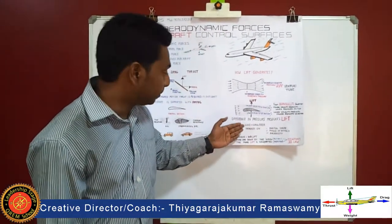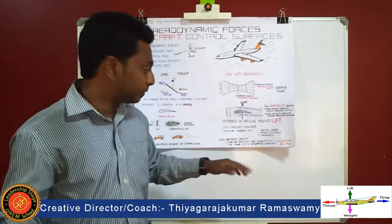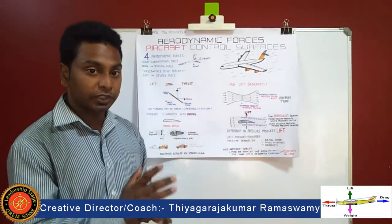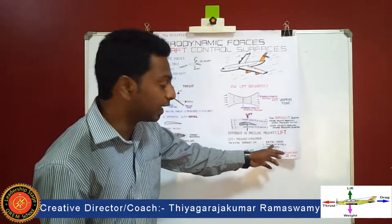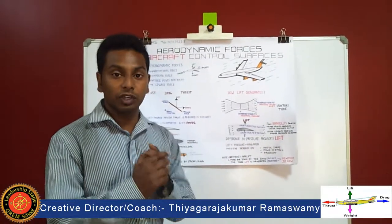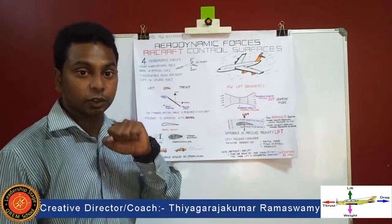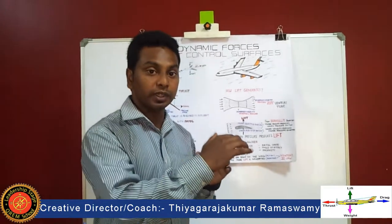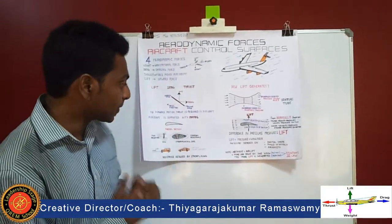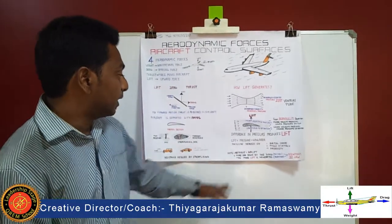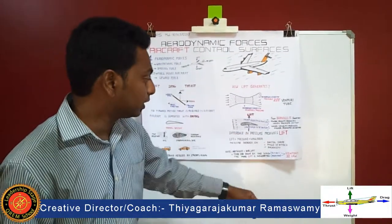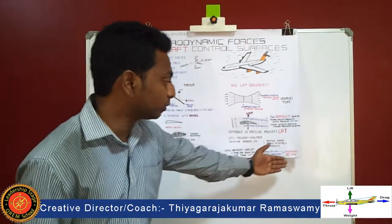Lift also depends on pressure and wing area — a larger wing area produces more lift. Pressure depends on the airfoil shape and the angle of attack, which I will explain shortly. It also depends on air density: more air density means more lift can be produced. At the same time, thrust must be present — once the aircraft is moving at speed, lift can be generated; without thrust there is no lift. Additionally, more air downwash below the airfoil produces more lift, which can be explained by Newton's third law.